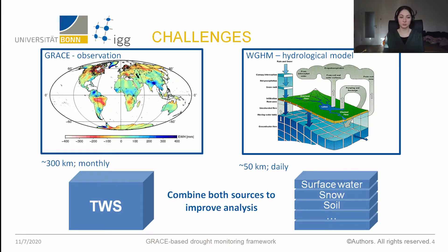The challenge with GRACE is that it has a coarse spatial resolution. Since precipitation and drought can be very local, this means GRACE might be too coarse for drought monitoring.